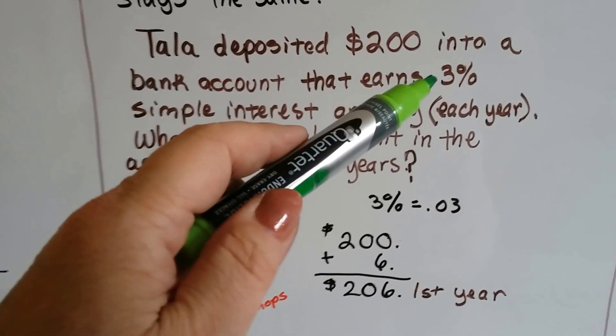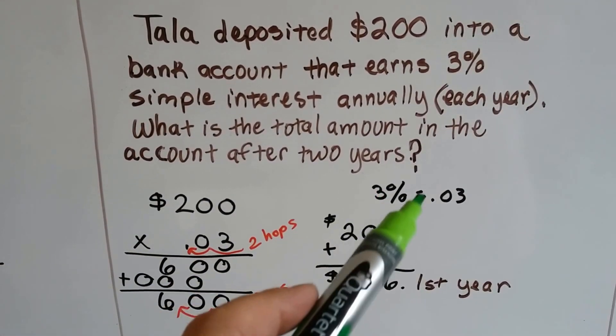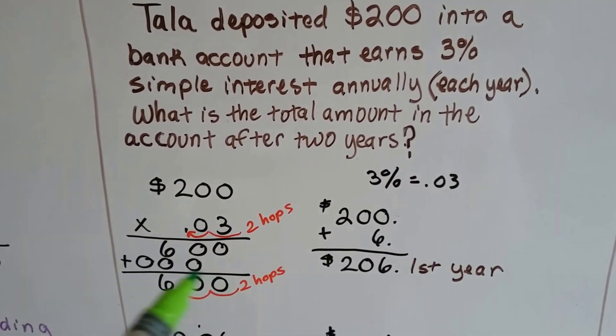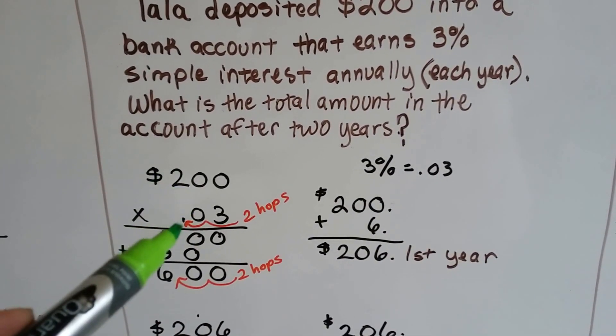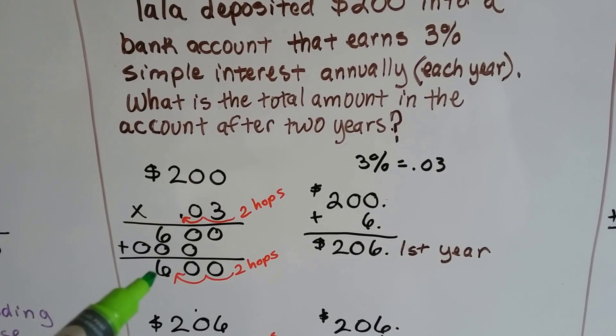So the first year is the $200 times 3% and 3% is .03 in decimal form. We do our $200 times .03 and we get $6.